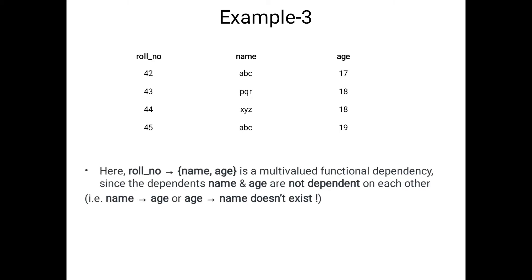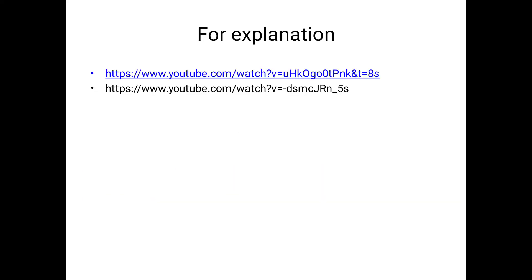For the second definition, consider another example: name and age are independent, but both are dependent on the roll number. Using the roll number we can find name and age. So we write: roll number implies name, age. Name does not give age, and age does not give name — so this is also multi-valued dependency.